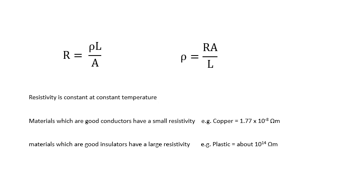Some metals have a very small resistivity. For example, copper. Copper is a good conductor because it has a small resistivity. Look at that: 1.77 times 10 to the minus 8 ohm meters. Don't forget the units.